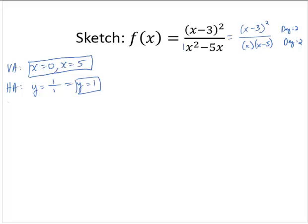How about any x-intercepts? x-intercept would occur when the numerator equals 0. So x minus 3 squared equals 0 implies that x equals 3.